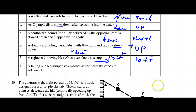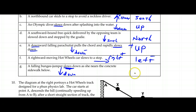Finally, a falling bungee jumper slows down as she nears the concrete sidewalk below. She's falling, so the motion is down. She's slowing, so the magnitude is getting smaller. That means the acceleration has to be opposite of down, so it has to be up. General rule: to slow down, for the magnitude of the speed to become less, you must have the acceleration in the opposite direction to the motion.